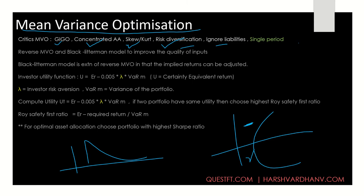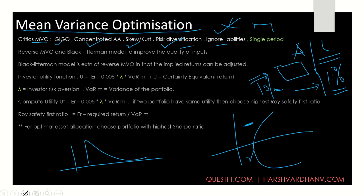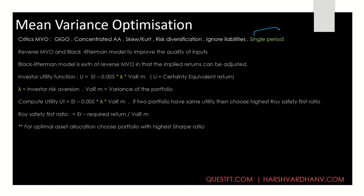Fifth, MVO ignores liabilities. In any company you have both assets and liabilities. MVO focuses only on assets. Suppose you're getting 10% return from MVO but your cost of funds or liability is 11% — MVO cannot solve your funding problem. Sixth, the single-period problem: MVO takes historical returns at a point in time and generates the optimal allocation. If correlations between assets change, MVO cannot account for that and has to regenerate the portfolio. The single-period problem is solved by Monte Carlo simulation.